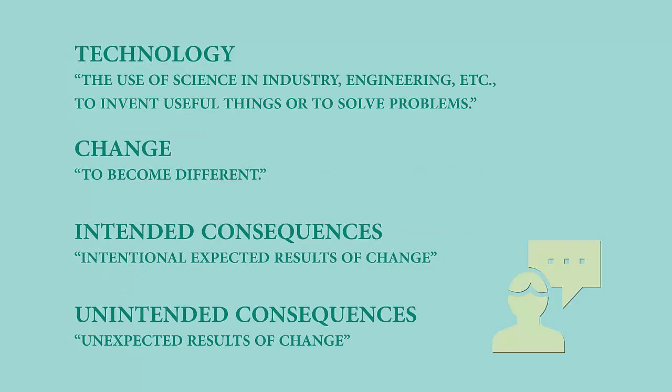The social media picture application is a good example of not only how fast things change due to advances in technology, but also how consequences — both intentional and unintentional — rise and change virtually as fast as technology. Depending on the technology, consequences can be minimal or enormous. We may not know all the consequences as the technological change goes mainstream. As we jump into the issues of computing, let's consider these four terms and what they mean to us: technology, change, intended consequences, and unintended consequences.